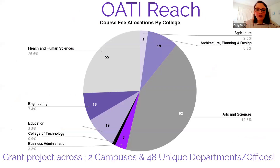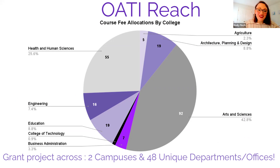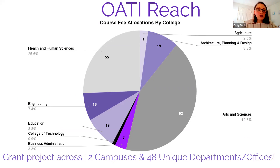That is the crew it takes for OATI's reach to be extensive. Our grant projects cross two campuses, and we have 48 unique departments and offices that have applied and created a resource. Arts and Sciences is the largest college, and by college the number of courses using the course fee — so students benefiting from that — is depicted in our data.